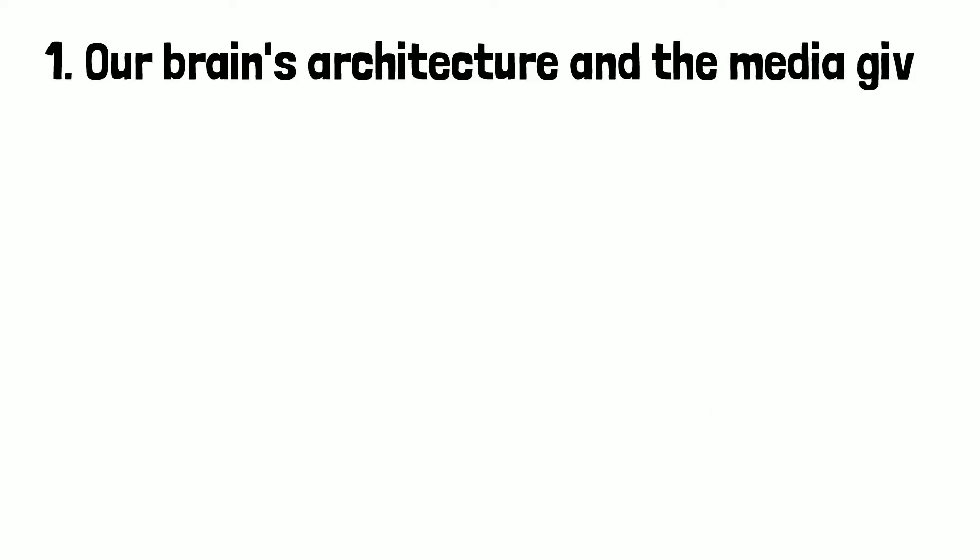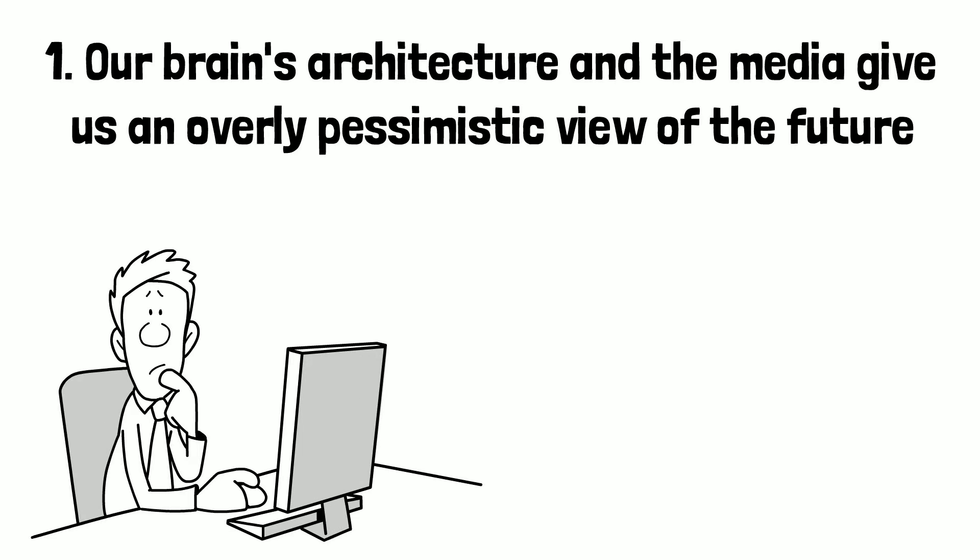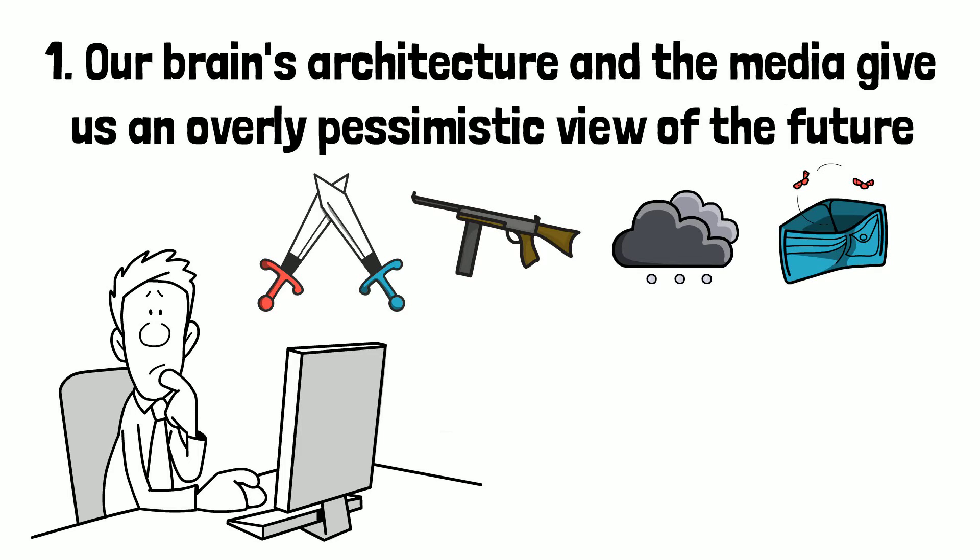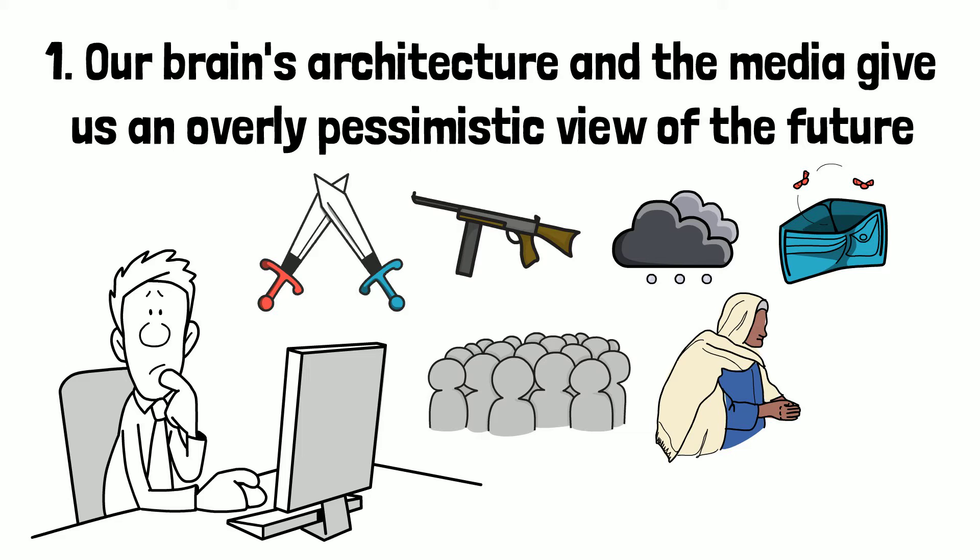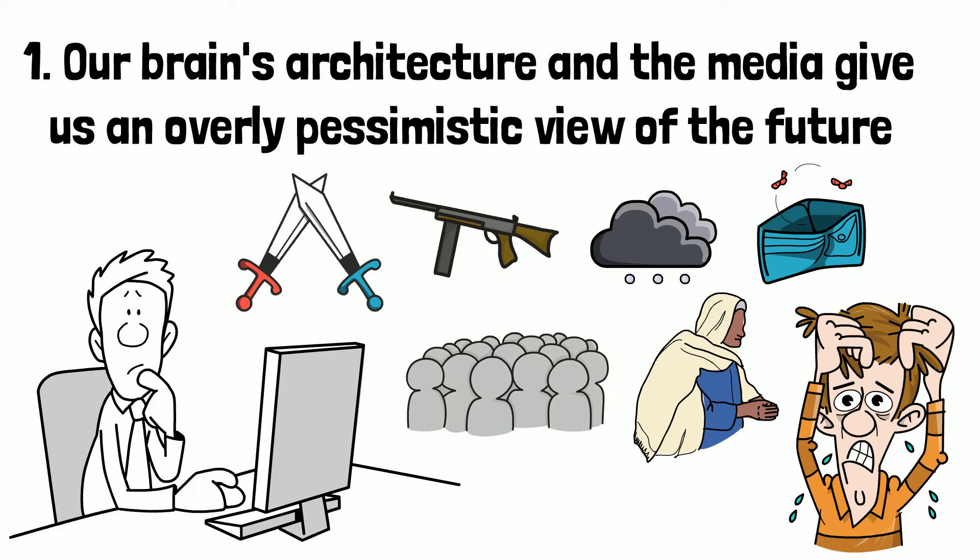Number 1. Our brain's architecture and the media gives us an overly pessimistic view of the future. It's difficult to evaluate the potential risks of war, terrorism, climate change, economic crises, population increase, and food shortages while thinking about the future. Many of these hazards appear so impending that someone who didn't take them into account may be considered crazy.